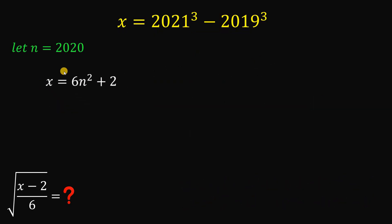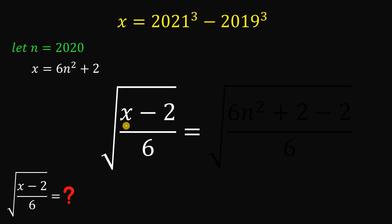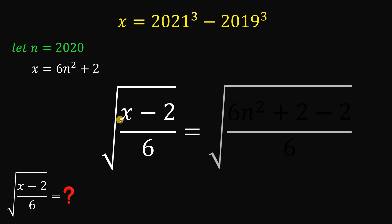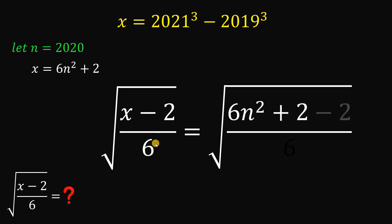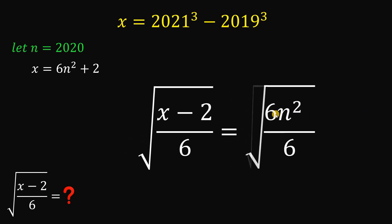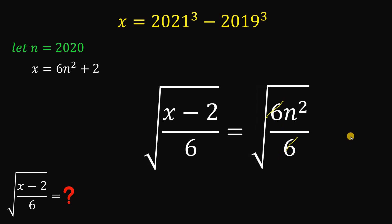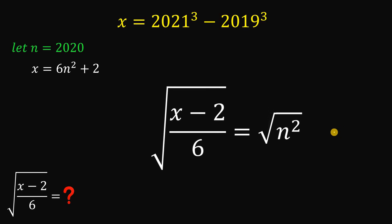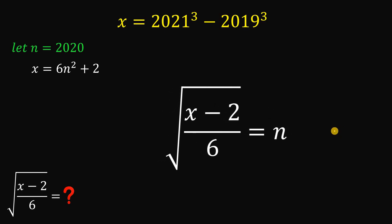We now know that x equals 6n² + 2. Let's evaluate the expression: square root of x minus 2, all over 6. Substituting, we get the square root of (6n² + 2 − 2), all over 6. The +2 and −2 cancel to give 0, leaving square root of 6n² over 6. This simplifies: the 6 cancels, and the square root of n² is simply n.